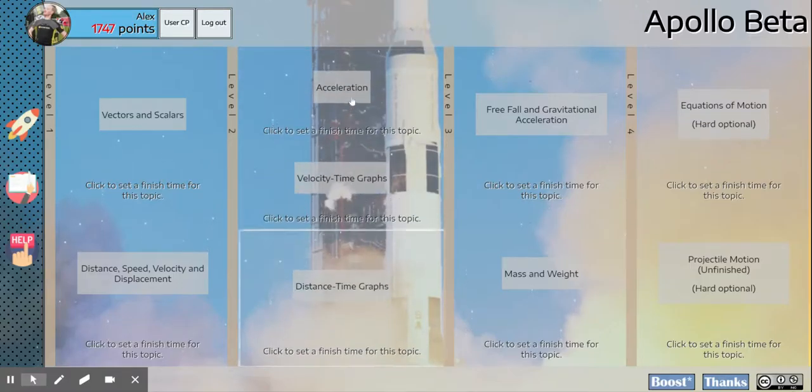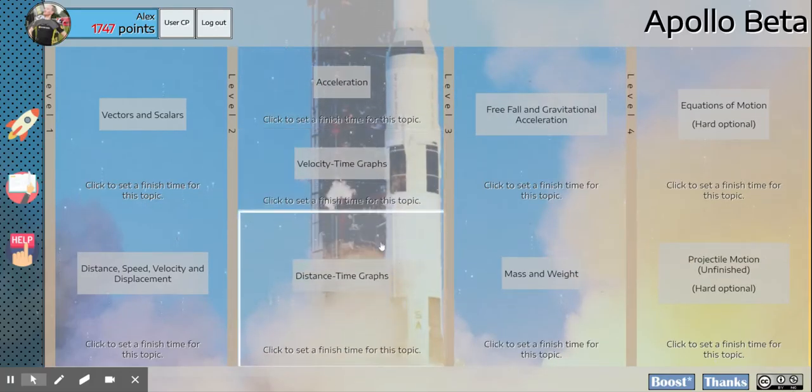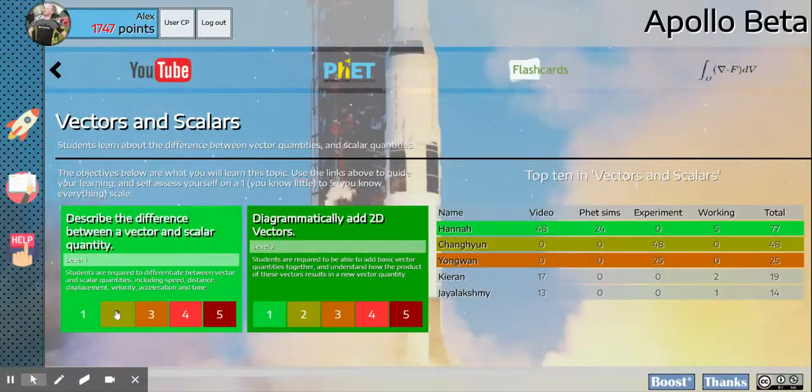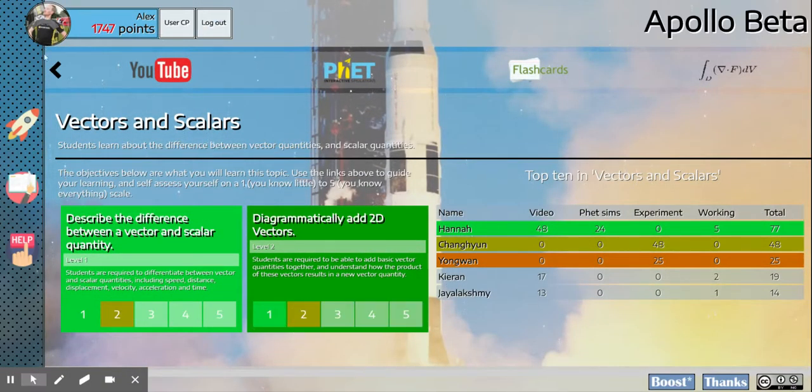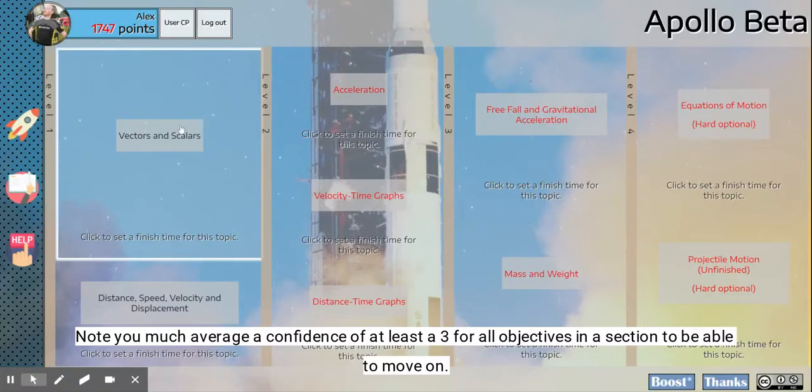and you'll see now that some of my next options have become available to me. Now on yours, these will be red still, but I've completed some more of these, and so that's why everything is now available. Okay, but if I go back and I say I'm not very good at these, then it won't let me progress until I'm confident with my vectors and scalars.